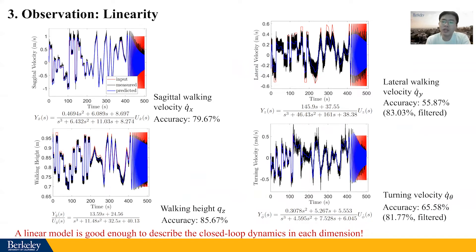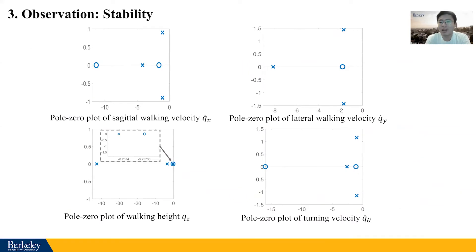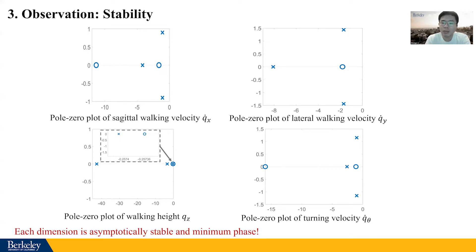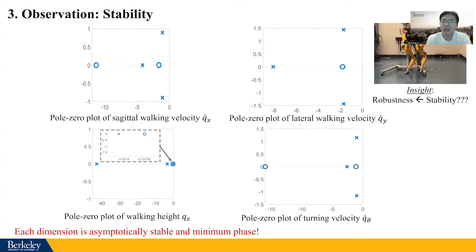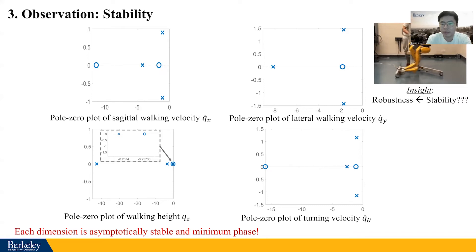Since we obtained an explicit model, we can apply stability analysis on it. We find that all the zeros and poles are on the left-hand plane, which means that each dimension is asymptotically stable and minimum phase. This can give us some insights about the reason for the robustness of this RL controller.